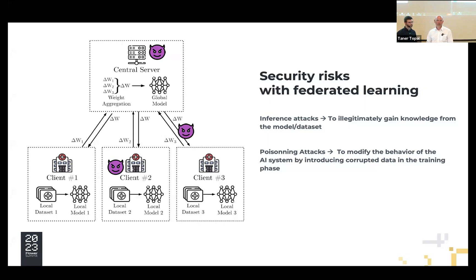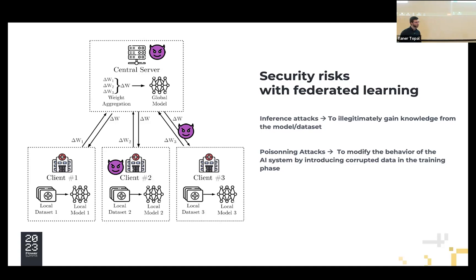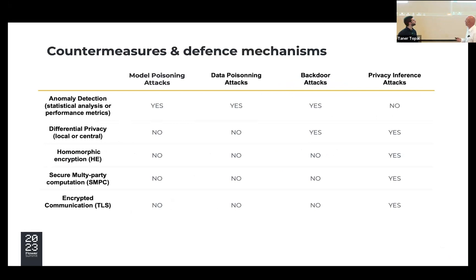Through an inference attack, it's possible to obtain information from the model or the dataset. It's also possible for the client to perform operations on the local dataset — for example, doing a permutation between two classes. Fortunately, for each kind of attack, there is a solution. For the inference attack, we can use homomorphic encryption.